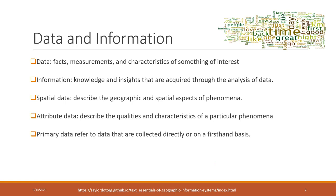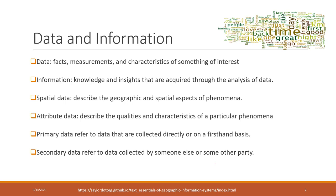Primary data refers to data you collect directly. For example, last week if you used your cell phone to collect GPS data, those are primary data. This week, if we had a LiDAR lab and collected LiDAR point data, those would also be primary data. Secondary data means data collected by someone else — for example, if you used the demo GPS data last week, or the demo 3D model from LiDAR data this week, those are secondary data.